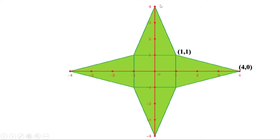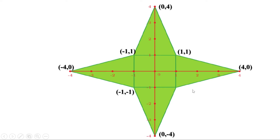This point is 0 units to the right of the center point and 4 units above the center point. This point is 0 units to the right and 4 units below the center point. So we have marked the coordinates of all the corners, and now we can easily draw this figure.